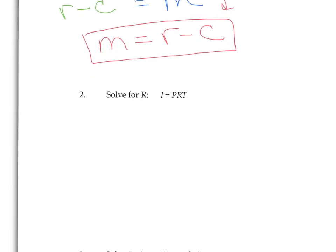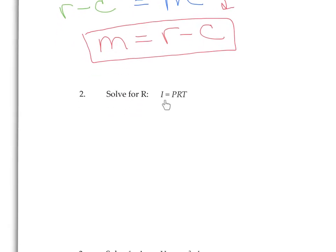Number two asks us to solve for R. This is the simple interest formula. Interest equals principal times rate times time. So we're going to isolate this R.